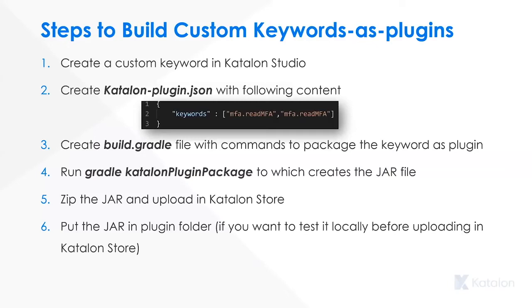There are steps to build this custom keyword as a plugin. The first one is to create a custom keyword in Katalon Studio. You need to create a katalanplugin.json file with the following content. This catalanplugin.json file is a new file that you're going to be adding within your existing keywords folder of your Katalon Studio project.